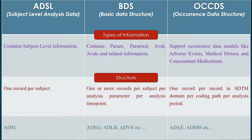In SDTM findings domains we have TEST and TESTCD, and in ADaM we create the PARAM or PARAMCD. The Occurrence Dataset has one record per record in the SDTM domain, per coding path, per analysis period. OCCDS can be related with SDTM AE, MH, or CM domains.